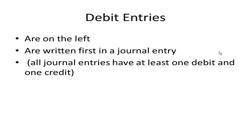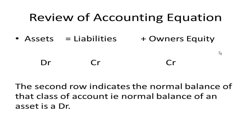In review, this takes us back to the accounting equation: assets equal liabilities plus owner's equity. The normal balance of an asset is a debit, the normal balance of liabilities is a credit, and the normal balance of owner's equity is a credit.